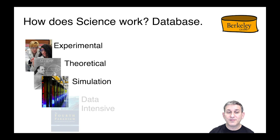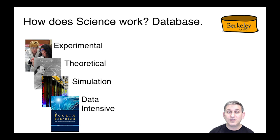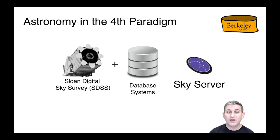Gray was talking about a fourth paradigm of science: data-intensive science, where you use sensing and large data storage to understand what's going on in the real world, studying it essentially offline through the data. As an example, Gray got involved with the Sloan Digital Sky Survey, an effort to photograph the entire sky using telescopes and store that data in database systems.